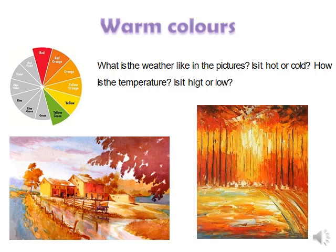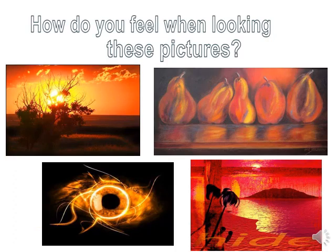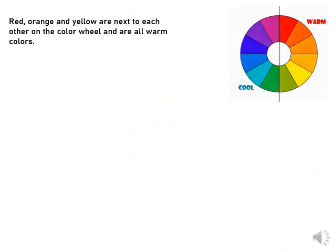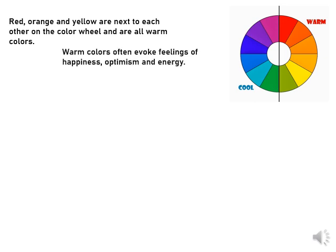So the warm colors are the hot colors. When you look at this picture, you can see the autumn season — these are its colors. How do you feel when looking at this picture? Red, orange and yellow are next to each other on the color wheel and are all warm colors. Warm colors often evoke feelings of happiness, optimism and energy.